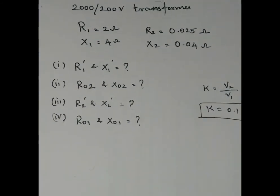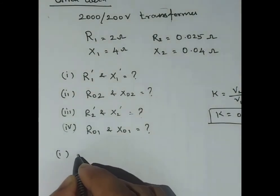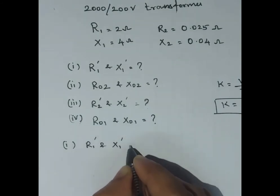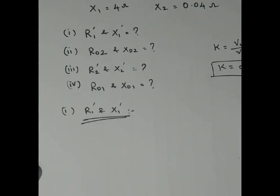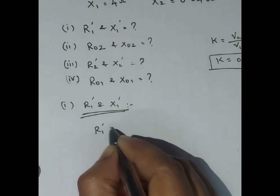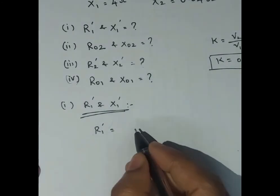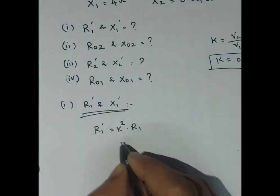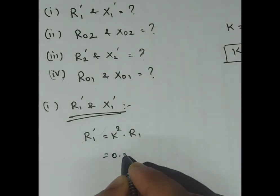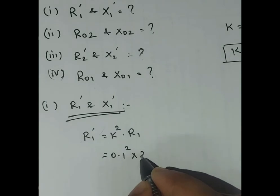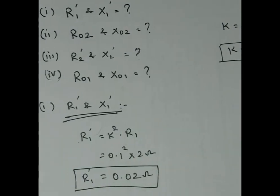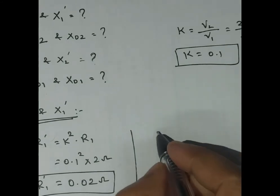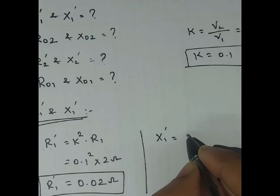So K equals 1/10, which is 0.1. Now for Case 1, we find R1' and X1' — the resistance and reactance of primary referred to secondary. When impedances are referred to secondary, K squared is multiplied. So R1' = K² × R1 = 0.1² × 2 = 0.02 ohm.